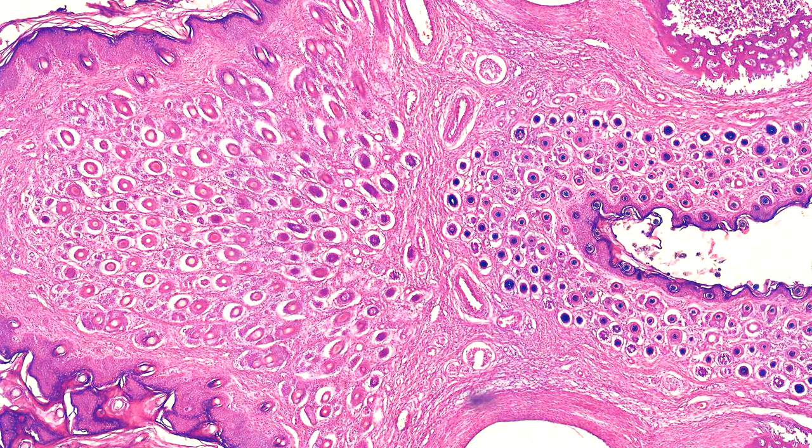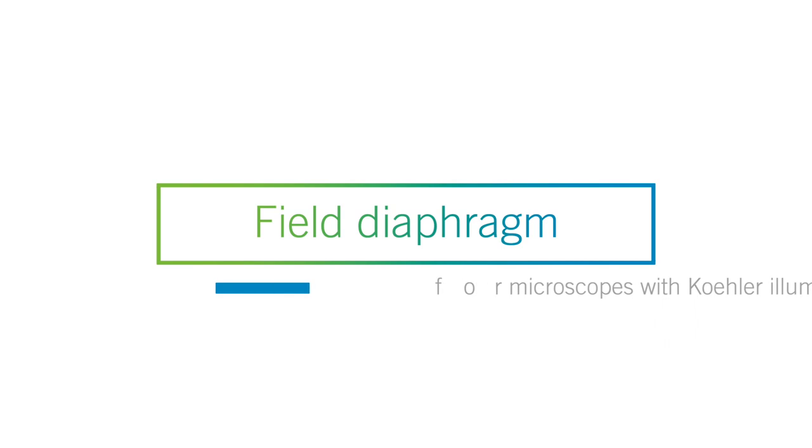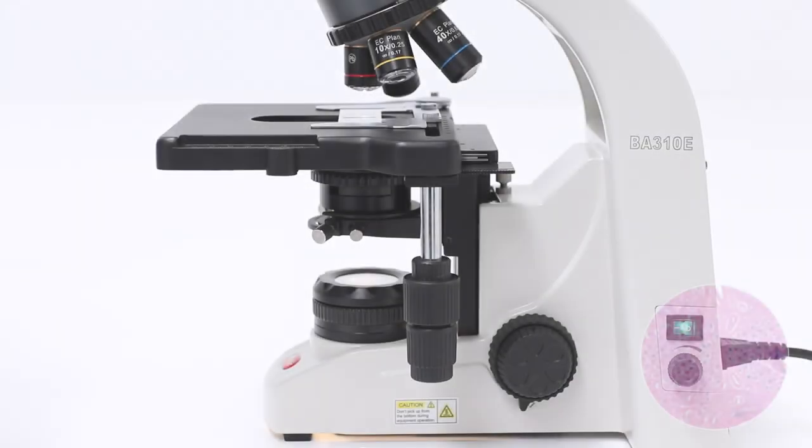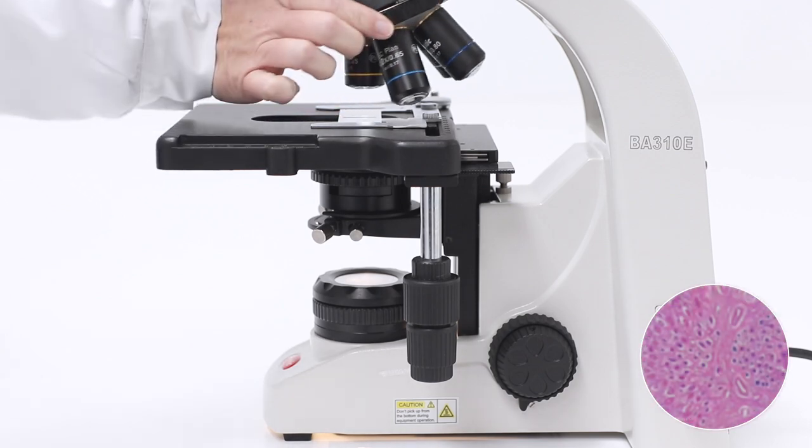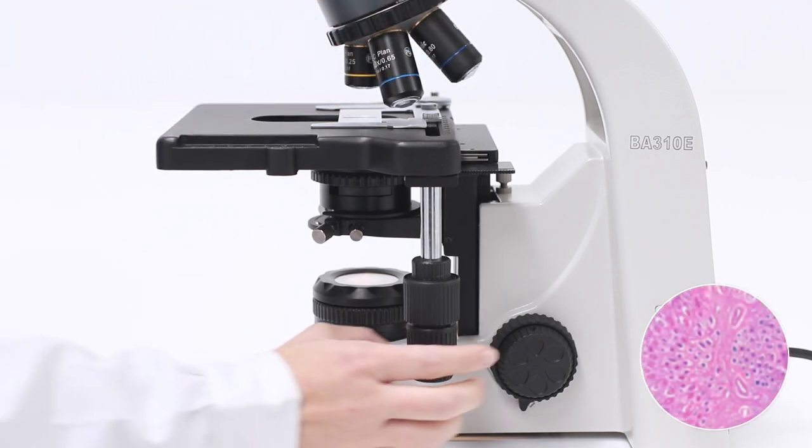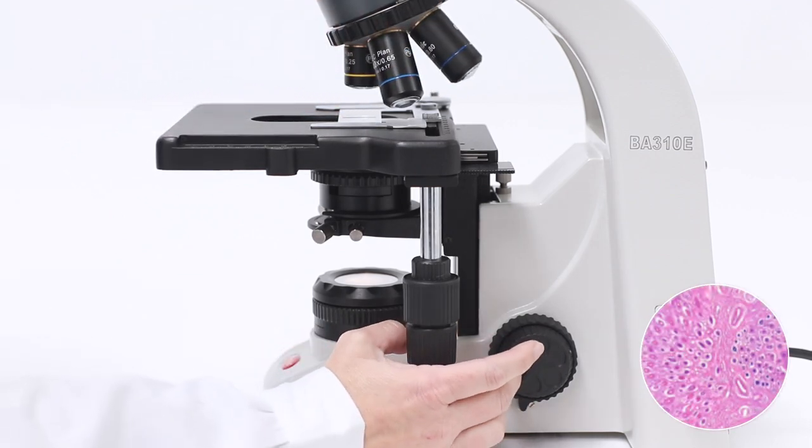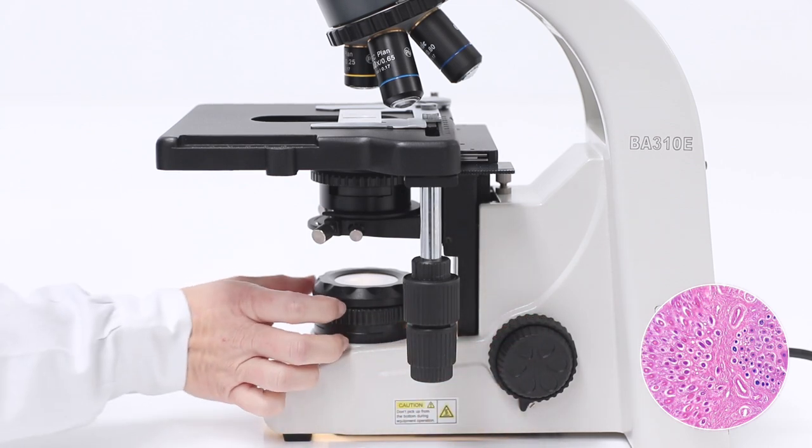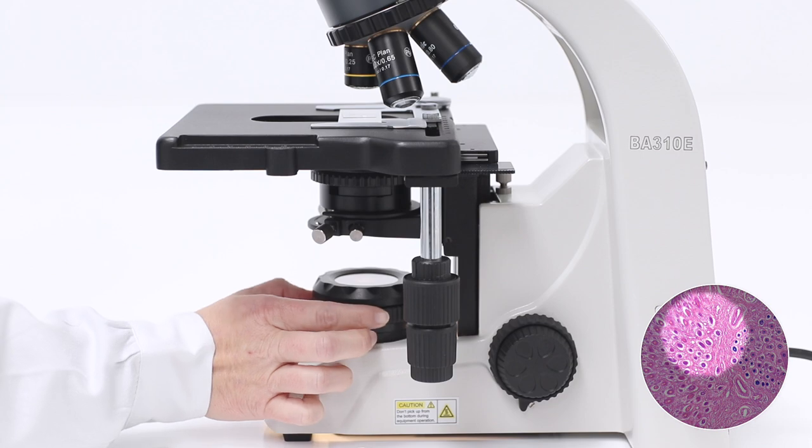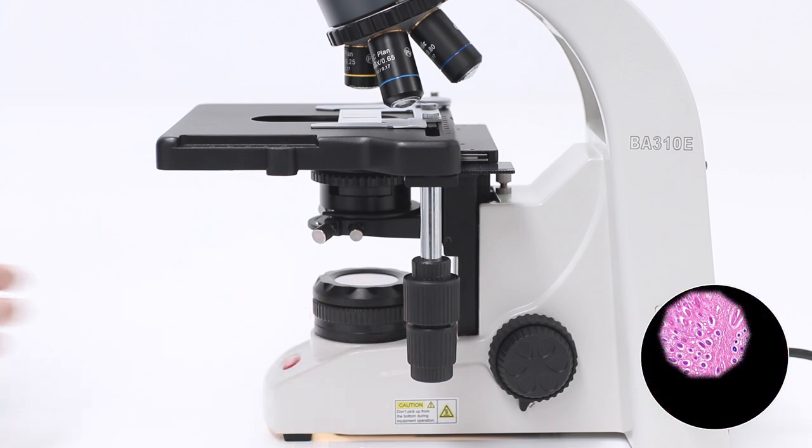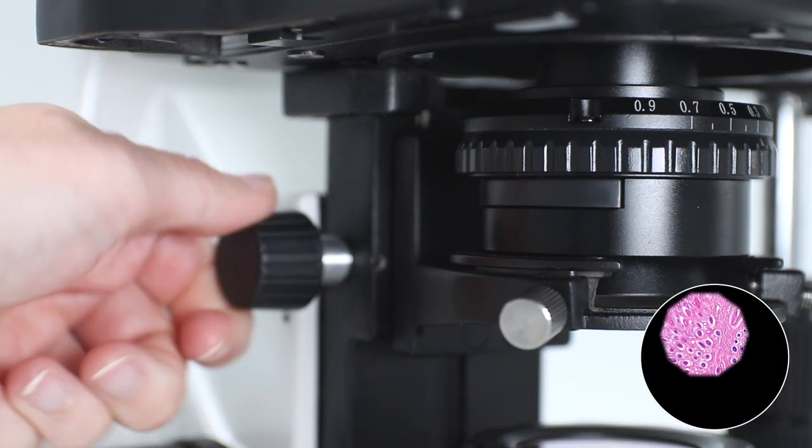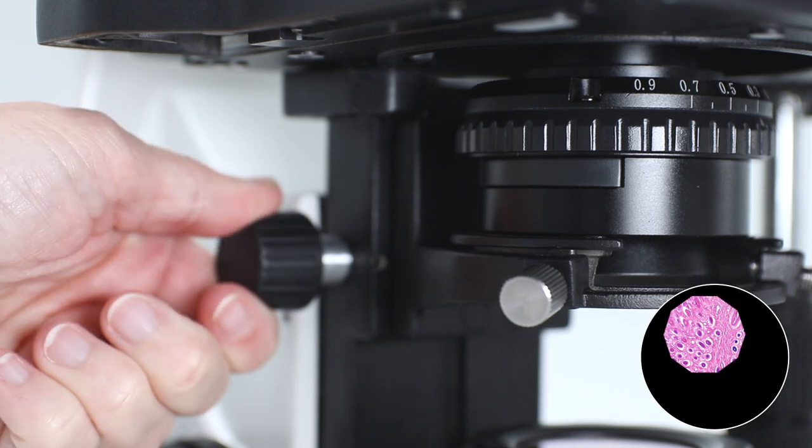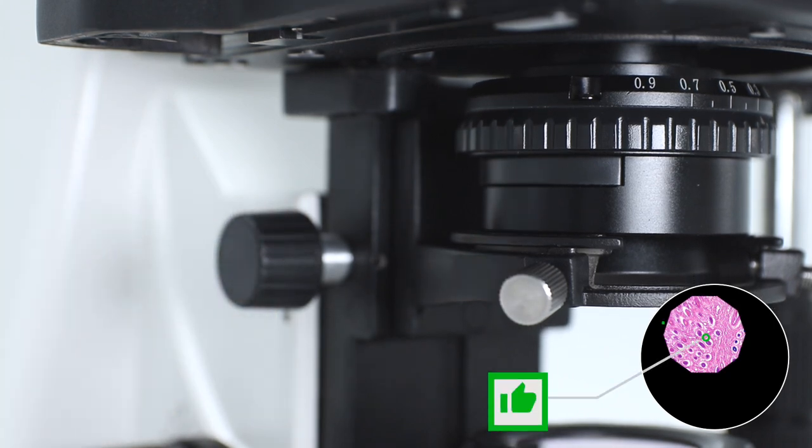For the field diaphragm, place the 10x objective on the light path and focus the sample. Close the field diaphragm until it appears in the field of view. Focus the edges of the diaphragm by using the condenser's focusing system. Both the sample and the diaphragm must be focused.